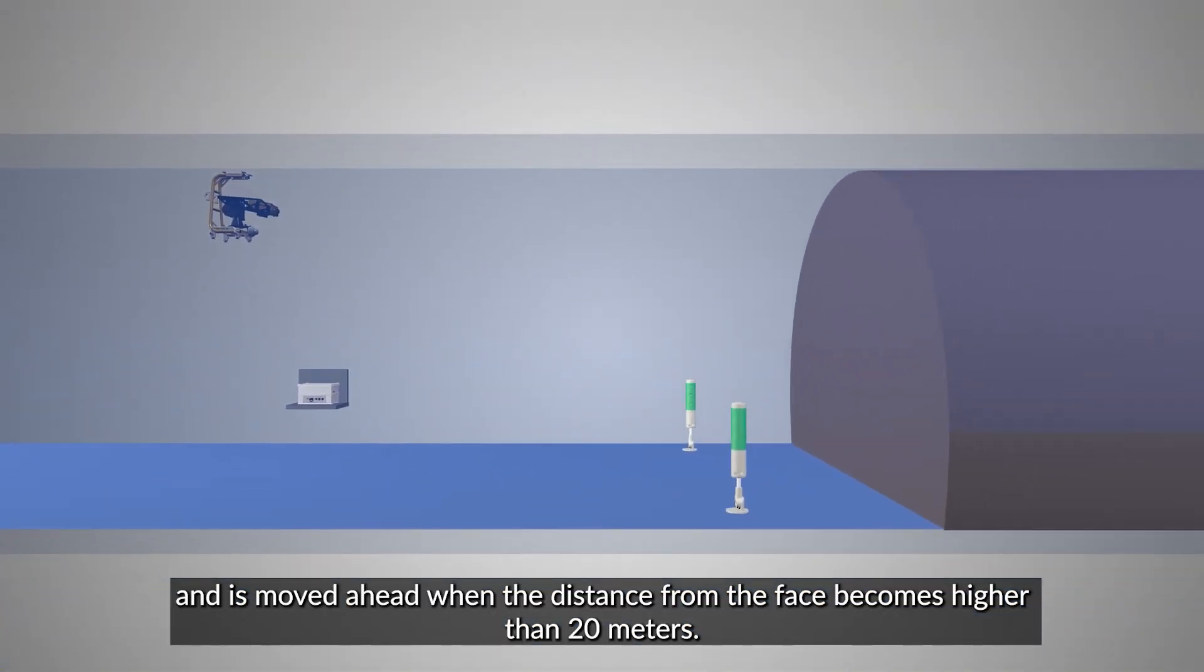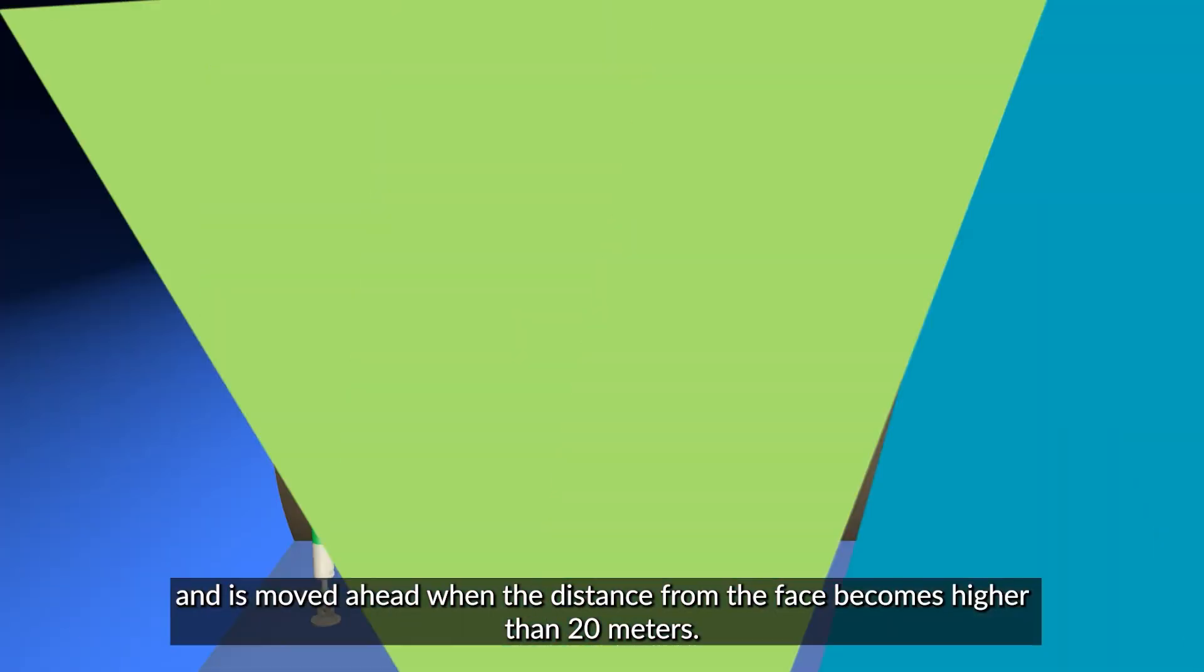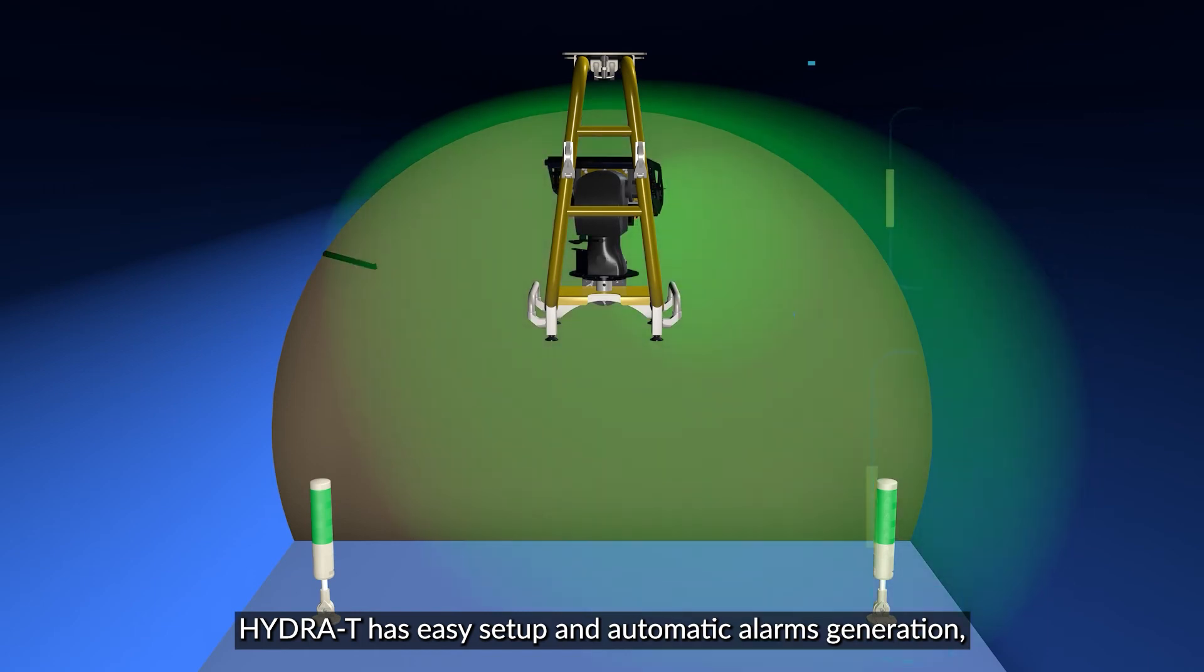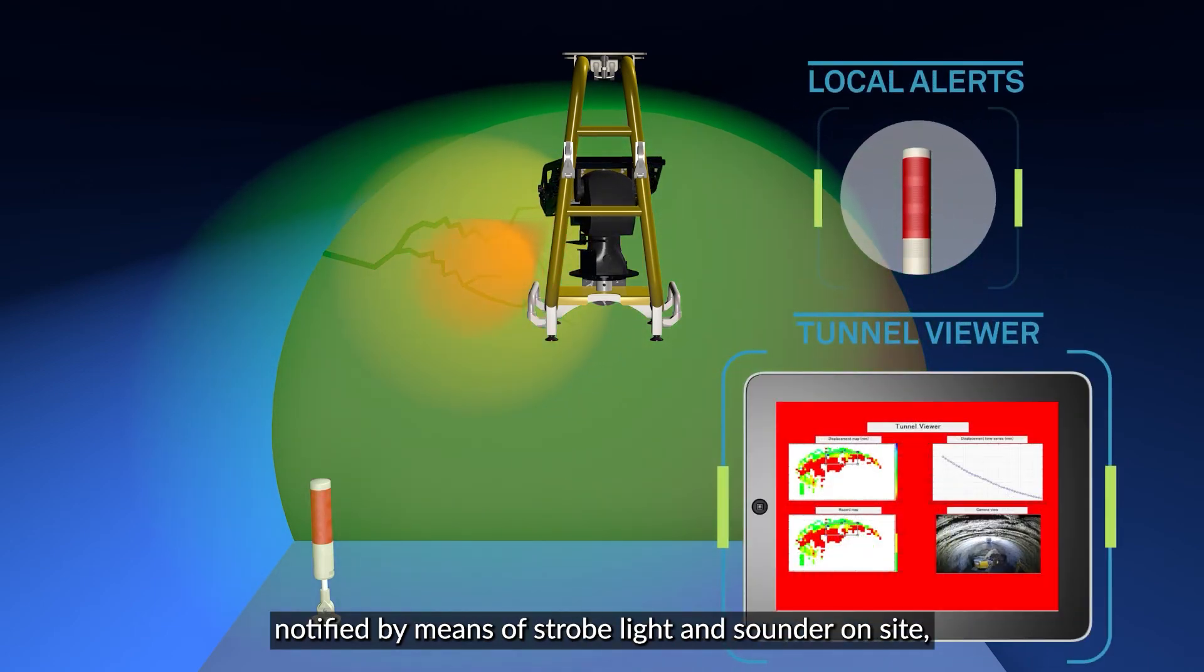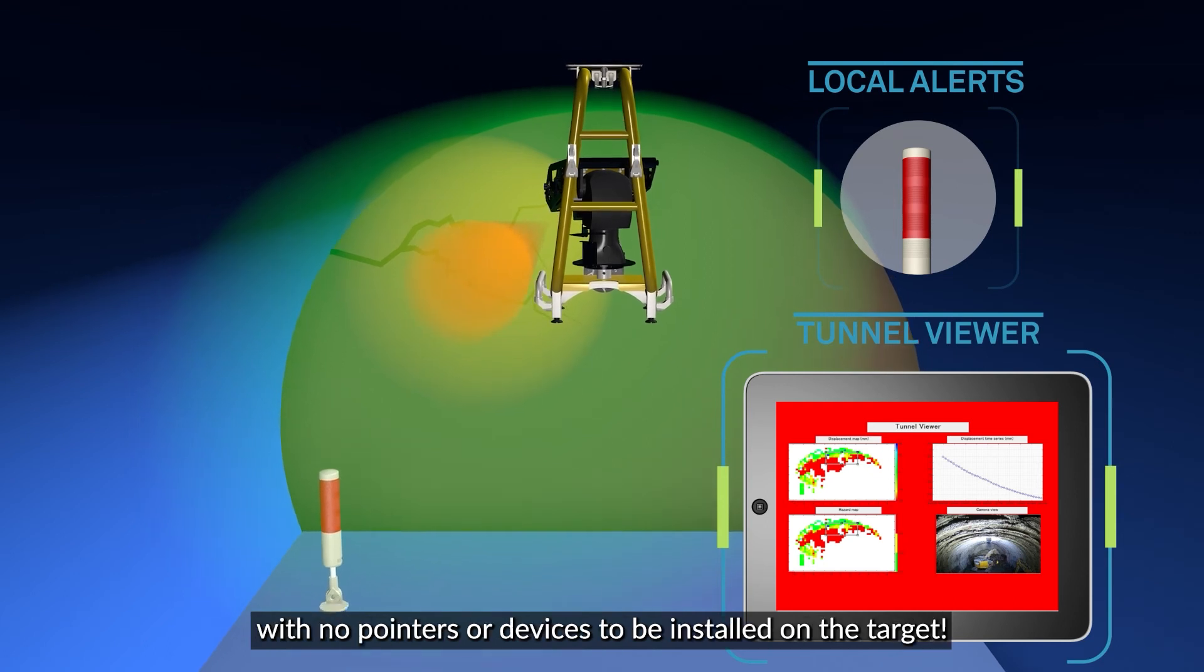And is moved ahead when the distance from the face becomes higher than 20 meters. Hydra T has easy setup and automatic alarms generation notified by means of strobe light and sounder on site, with no pointers or devices to be installed on the target.